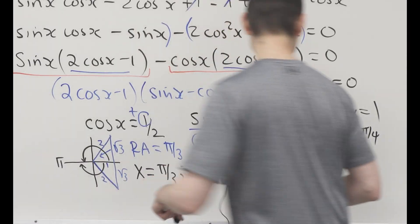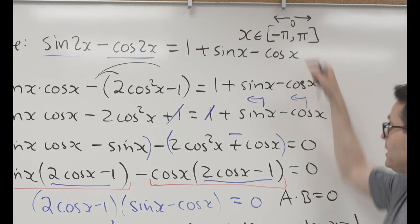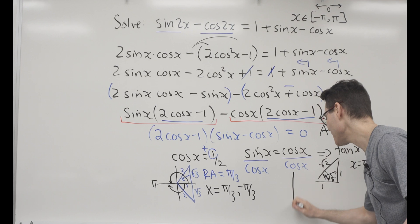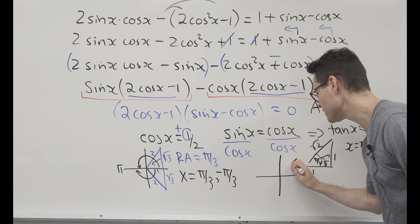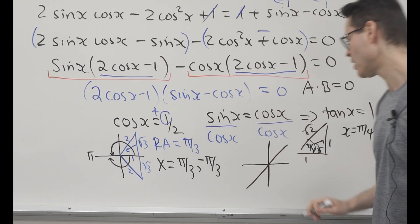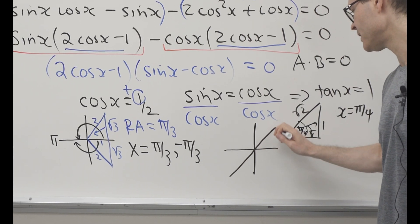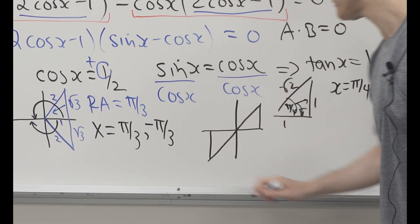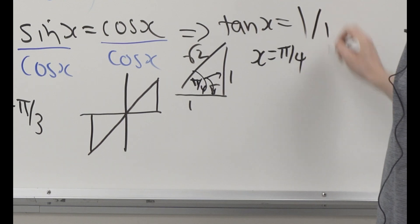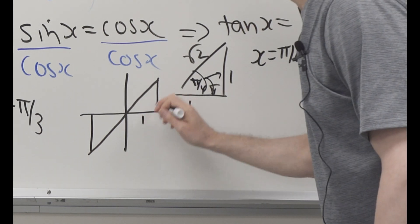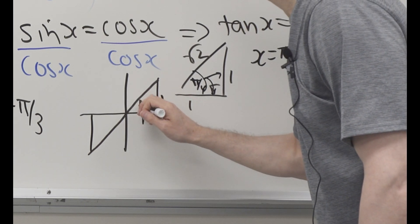Okay, also, we want all the answers between pi and negative pi. So for tan, I'm going to draw a picture. Tan is positive in the first and third quadrants. Okay, so, and you can draw in your special triangles if you want. Remember, that's just 1 over 1, so 1 and 1, and the reference angle is pi over 4.